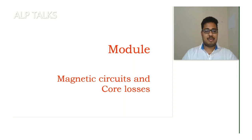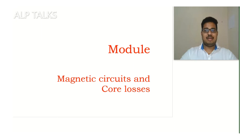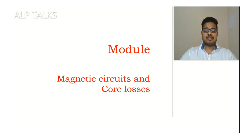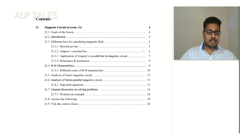Coming to today's topic, it's about magnetic circuit and some core losses. Magnetic circuit is the most important concept in today's electrical devices — it may be a motor, transformer, generator, or some reactor. In most places we are using magnetic circuits for converting energy from one form to another form. Magnetic plays a major role, so just to have some good understanding on this concept, I'm discussing this topic.